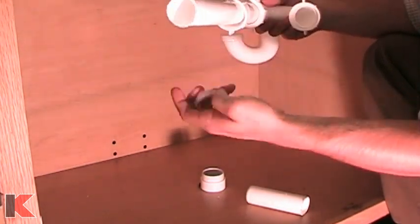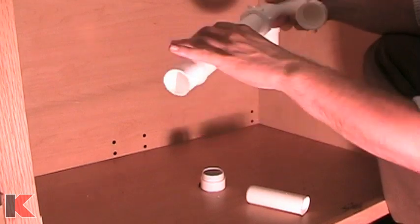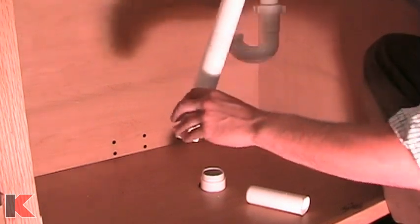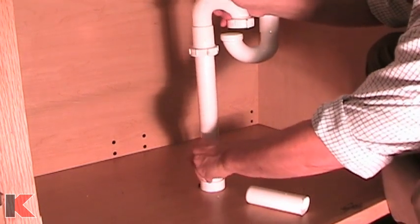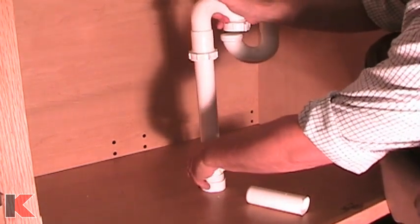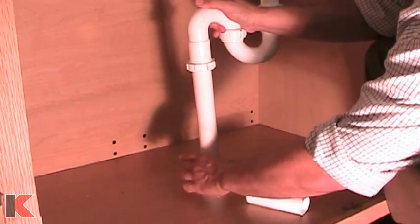To attach the S-trap to a glue or schedule 40 PVC rough-in, use a marble connector. Feed a slip joint nut followed by a slip joint washer onto the drain tube. Attach the drain tube to the marble connector by tightening the slip joint nut and washer.